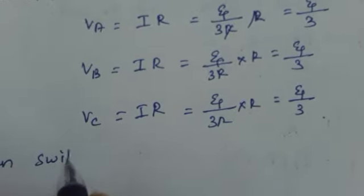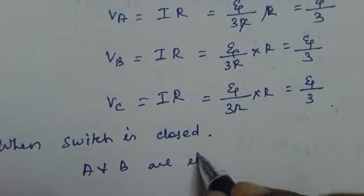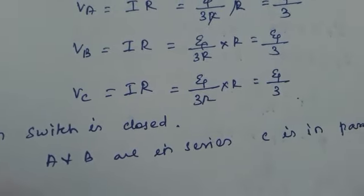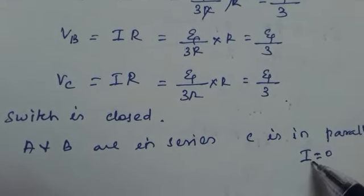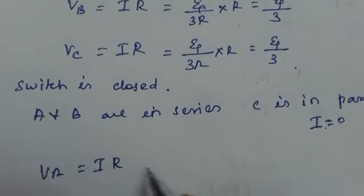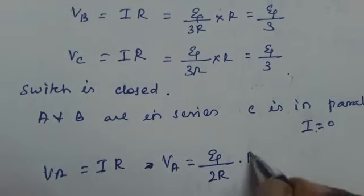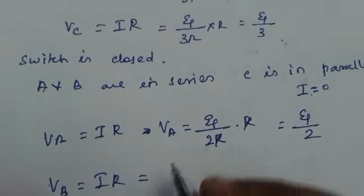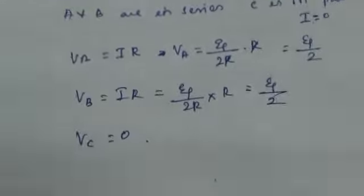When the switch is closed, only bulbs A and B are in series and C is in a parallel combination, so no current flows through C and IC = 0. The voltage across A is VA = I × R = (ψ/2R) × R = ψ/2. Similarly, VB = (ψ/2R) × R = ψ/2. Since no current flows through bulb C, VC = 0.